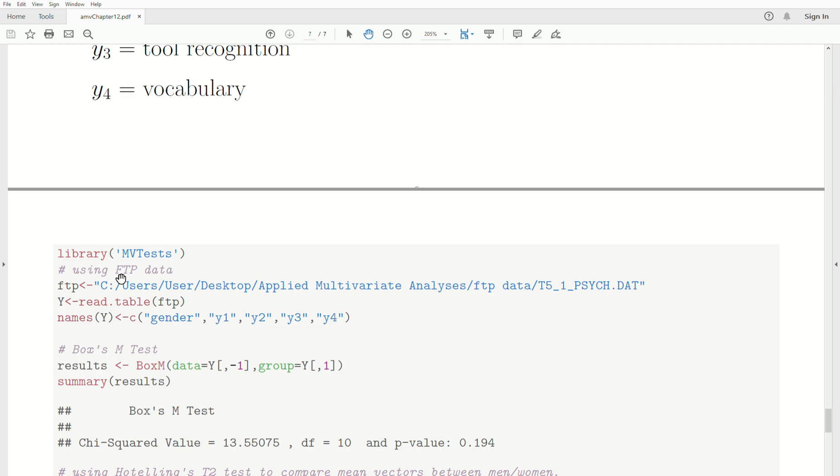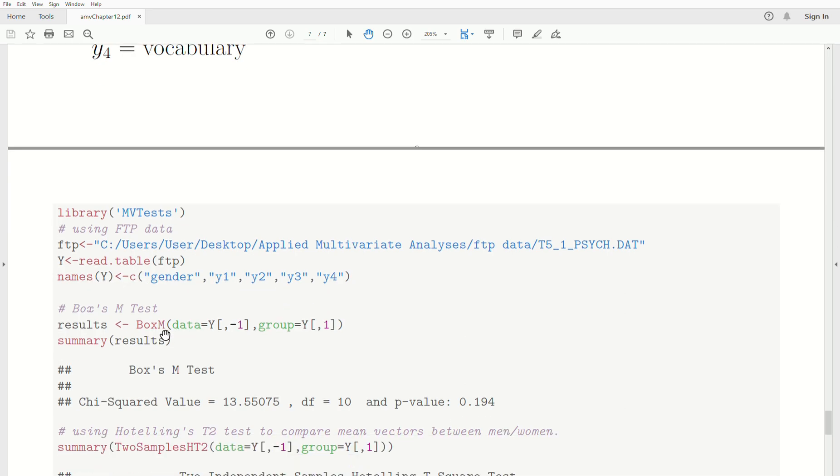And so we will conduct the test. We'll do Box's M test first to see if the covariance matrices are equal. And if they are, or at least not enough evidence to reject, then we'll do Hotelling's test. So the library MVTest, we load the data, name the columns, and then we look at Box M test.